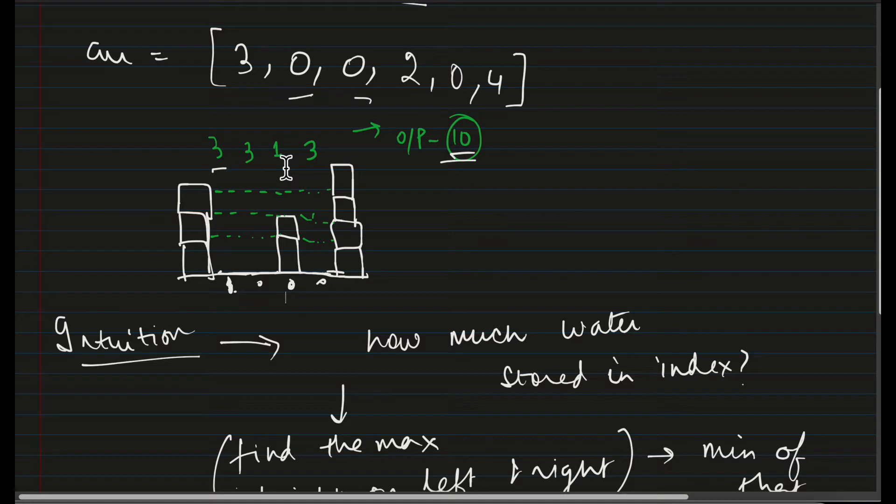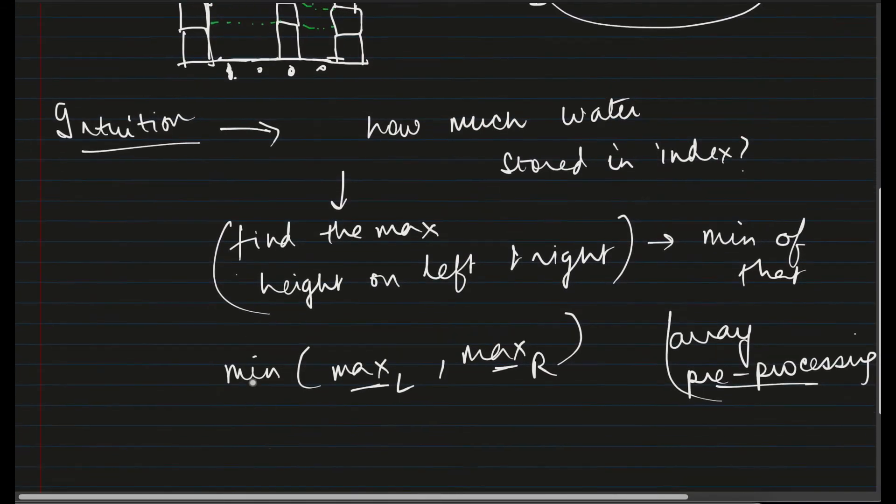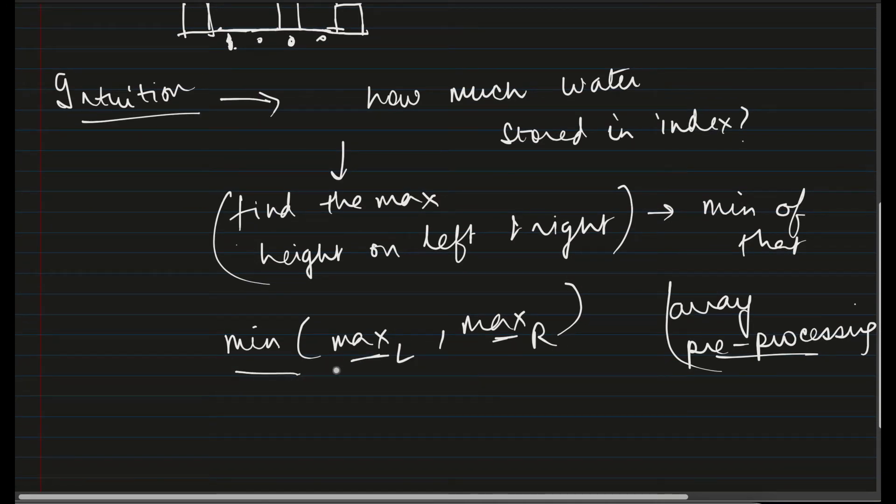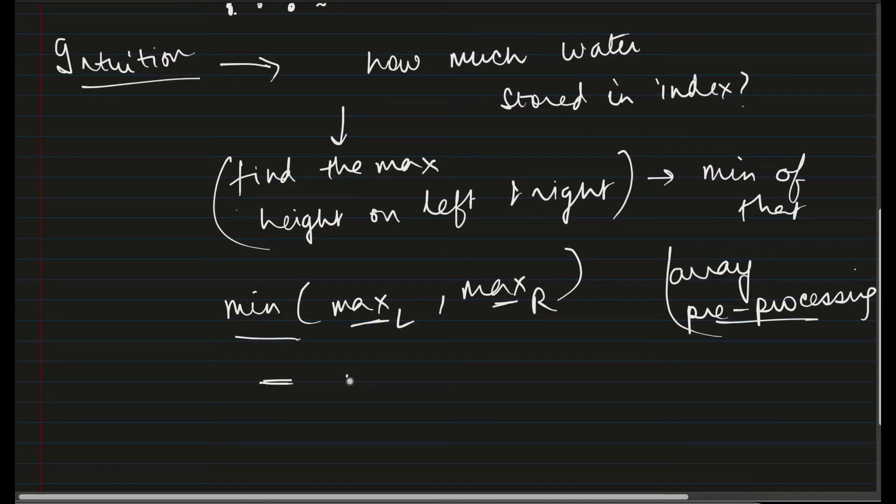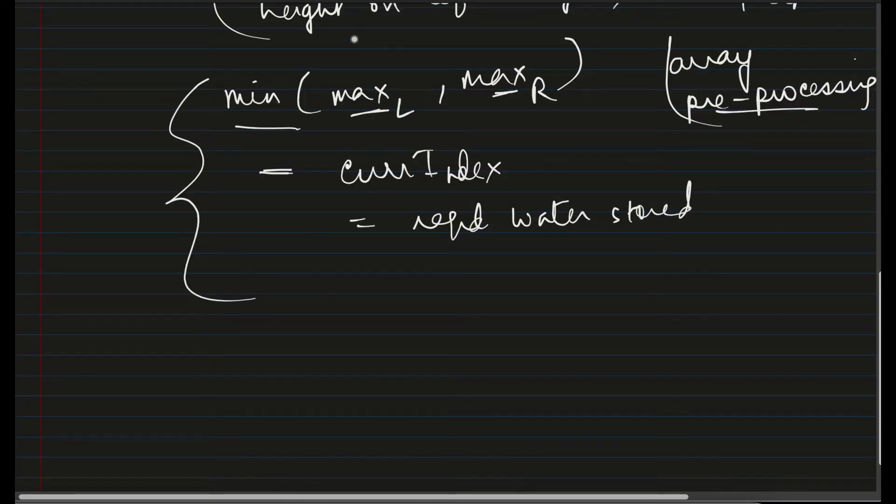So how can we go from 3 to 1? If you do minus 2? So what is 2 here? The height of the existing block means the height of the block at this current index. From that, what can we conclude? That if we are able to find the minimum of the maximum height of left and right, from that, if we can minus the current value, the current index is height, then we can get the required water stored in every index. That is what we can deduce from this. This is the formula.